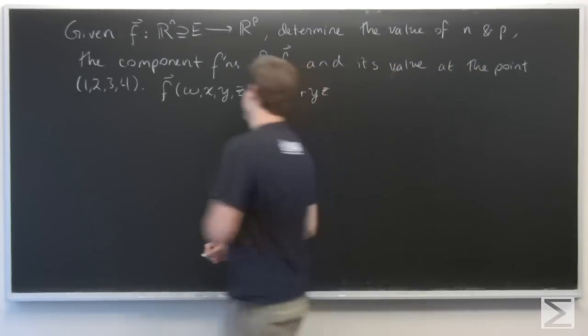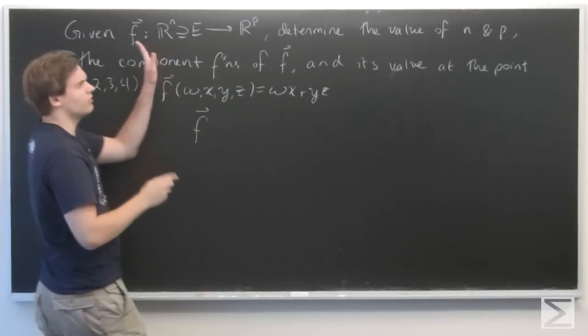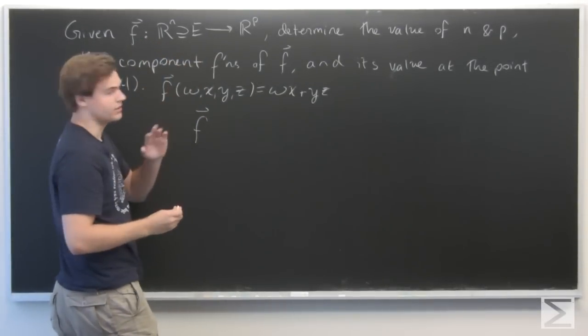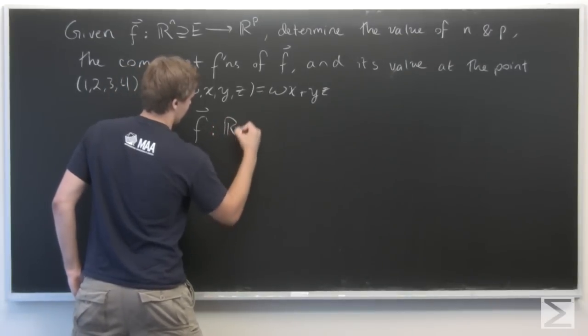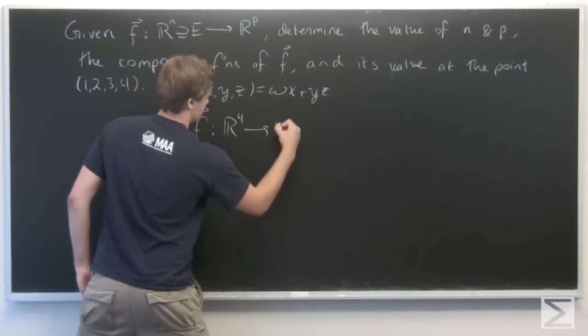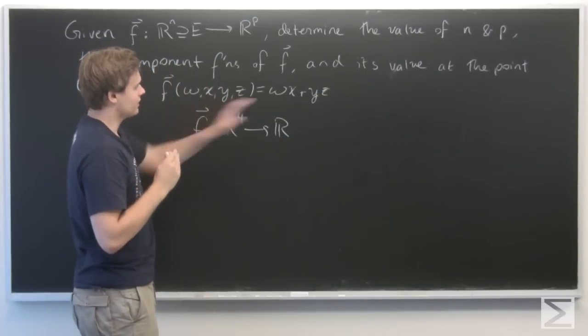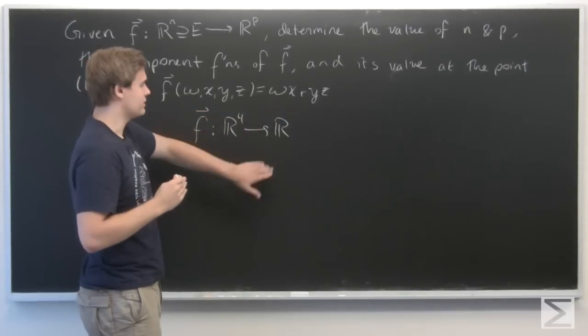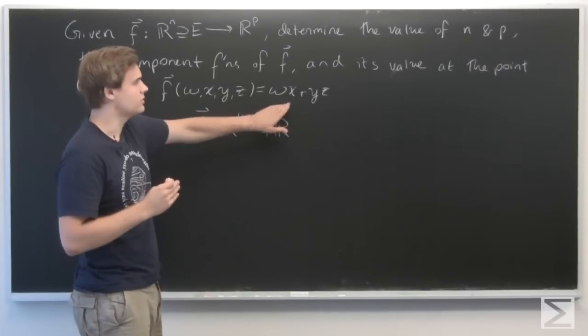So f, its domain is all of Rⁿ, or R⁴ for this case. We can write that f is a function from R⁴ to R. And since the codomain is R, we only have one component function, and that's just f itself.